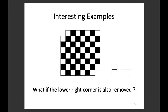In homework two, a related question asks: if we remove one white square and one black square from the board, show that we can always cover the checkerboard with domino pieces. That is the task for that homework question.